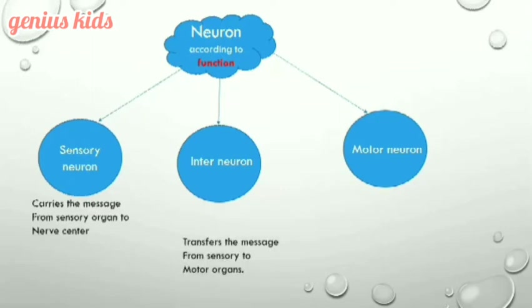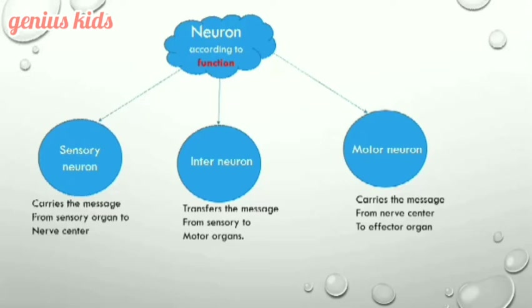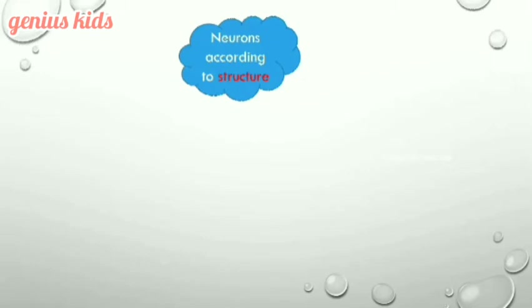The interneuron transfers the message from sensory to motor organs. The motor neuron carries the message from the nerve center to the effector organ. On the other hand, neurons can also be classified according to structure or shape.